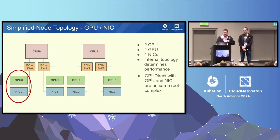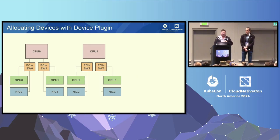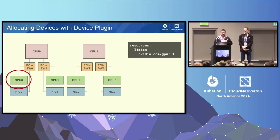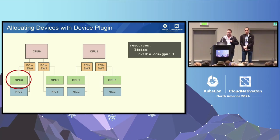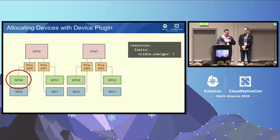Let's walk through what happens when we use device plugins to allocate devices. Suppose a first request comes in for just a single GPU. The scheduler sees a GPU is available on that node via the extended resource advertised by the device plugin, assigns the pod to that node, and sends it to the kubelet. The kubelet calls the device plugin, which picks GPU zero. Everybody's happy — GPU zero is now in use.